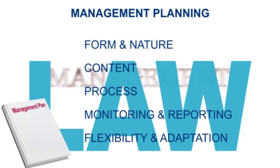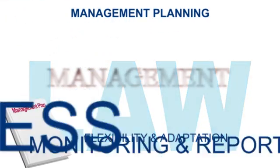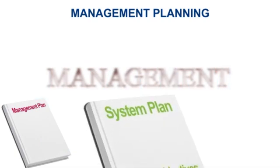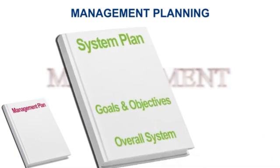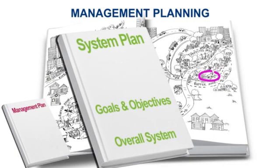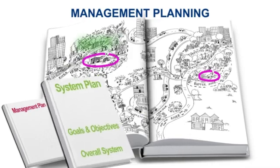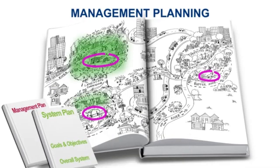Protected areas law should require a management plan for each site. In addition, it should require a system plan to identify conservation goals and objectives for the overall system, in order to achieve a comprehensive network of coherent, representative, adequate and interconnected protected areas.